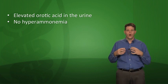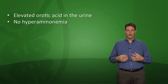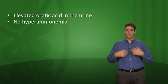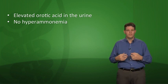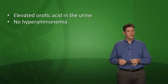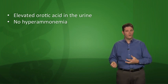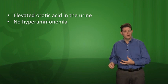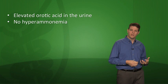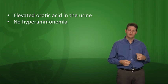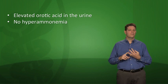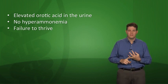This distinguishes it from OTC (ornithine transcarbamylase) deficiency, a urea cycle disruption where patients have both high orotic acid AND high ammonia. So: high orotic acid plus high ammonia is OTC deficiency; high orotic acid plus normal ammonia is orotic aciduria due to UMP synthase deficiency. Orotic aciduria also causes failure to thrive.